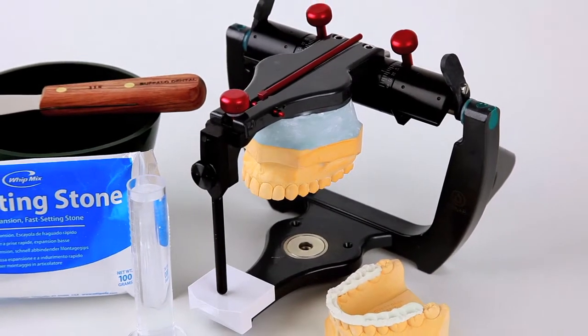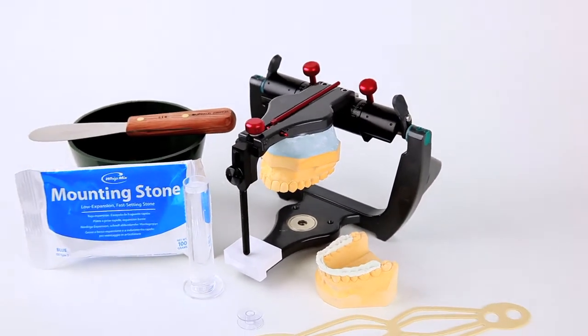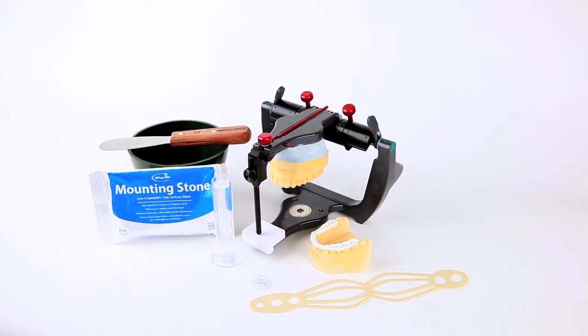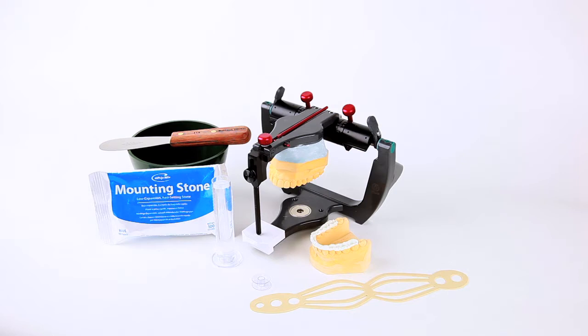This demonstration video is designed to show the proper use and advantages of the flexi-mount stabilization system when mounting casts to an articulator without a thumb screw by using a mounting button on the top arm of the articulator. This demonstration also shows mounting of the casts with a bite registration.